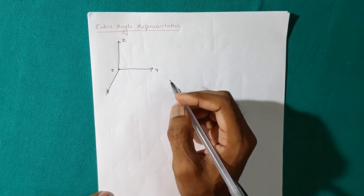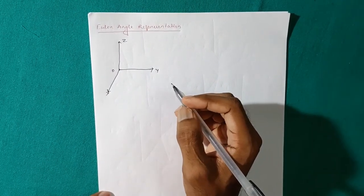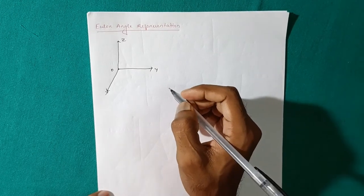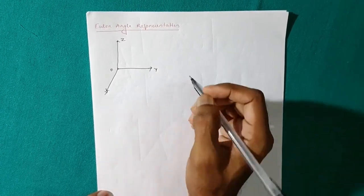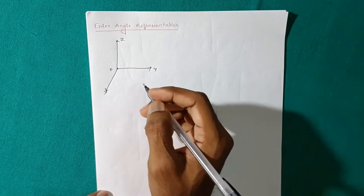So what happens in fixed angle representation, as we have studied earlier, the angle of rotations will be provided on fixed axes. But here, the angle of rotation will be provided on the latest axis that we have got earlier.